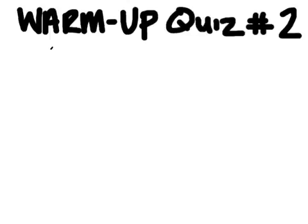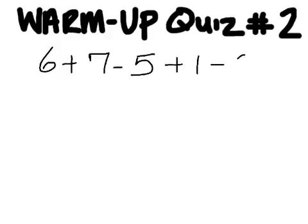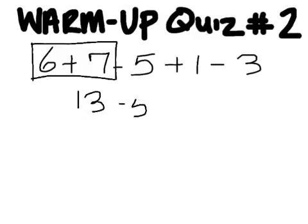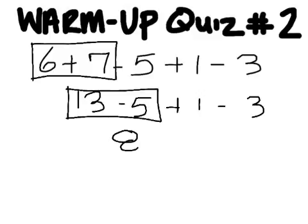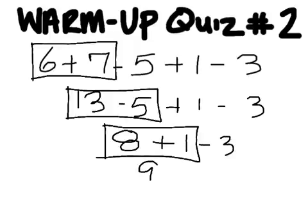Problem number two. You have to do 6 plus 7 first which is 13. And then 13 minus 5. That's 8. And then 8 plus 1 is 9. And then the answer is 6.